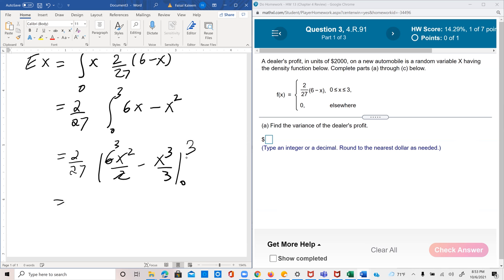0 to 3. So 2 over 27, and 3x squared so 3 times 3 squared is 27 minus 27 over 3 which is 9. So 2 over 27 times 18.